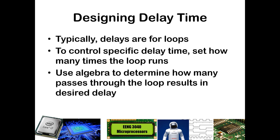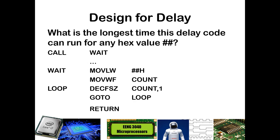We can also design for delay time. We can analyze and determine how long something will last, but we can also design. Typically, if we wanted to design a delay subroutine, we would use a for loop — initialize a counter, determine how many times we want to go through the loop, and just decrement. In some cases we would add NOPs to allow that delay loop to take a little bit longer. We can use algebra to determine how many passes through the loop will result in our desired delay.